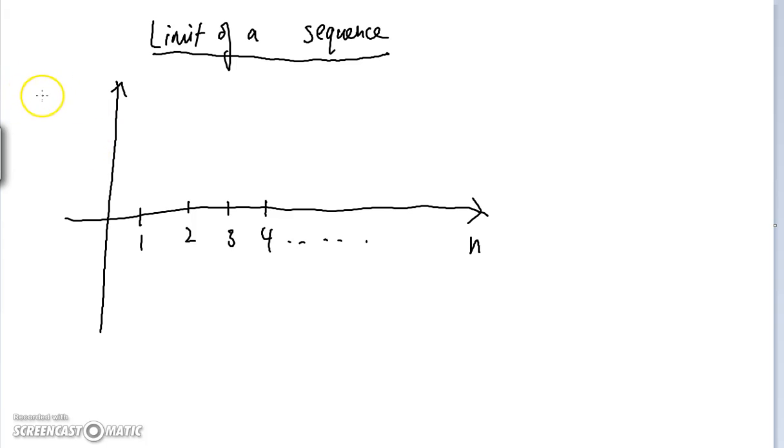is just a line that represents the terms of the sequence. So if we denote a sequence by s of n, that is, s of 1 is the first term, s of 2 is the second term, then s of n is the nth term of the sequence.